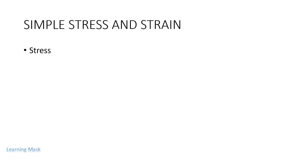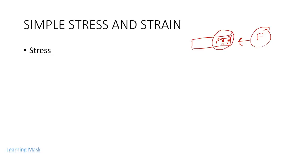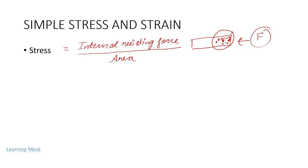Now let's define stress. Suppose a material is subjected to an external force F. When an external force acts on an object, a resisting force is set up within the component. The internal resistance force per unit area acting on the material is called stress. Internal forces divided by area equals stress, and its unit is Newton per meter squared.